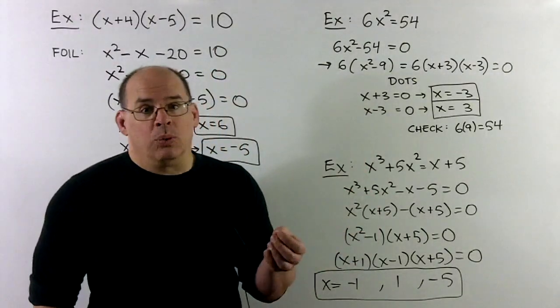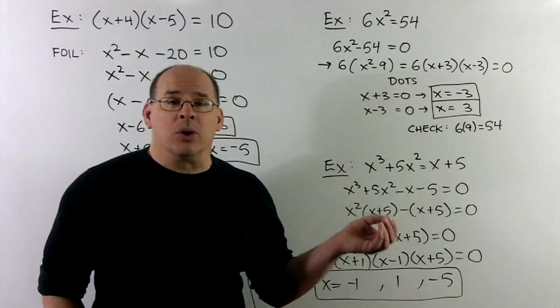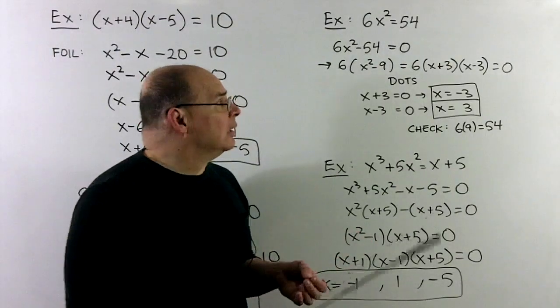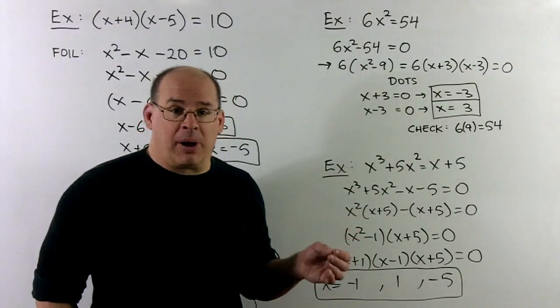If we check, if I put plus minus 3 into x squared, that goes to a 9 and we get our answer right away. 6 times 9 is 54. So, difference of two squares, fair game for these type of problems.